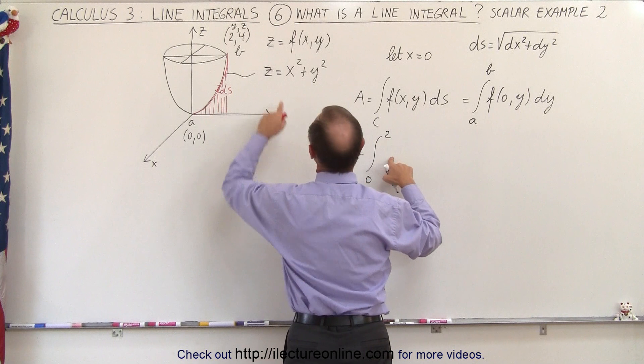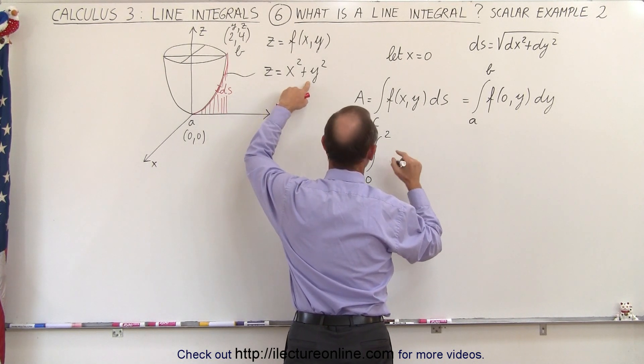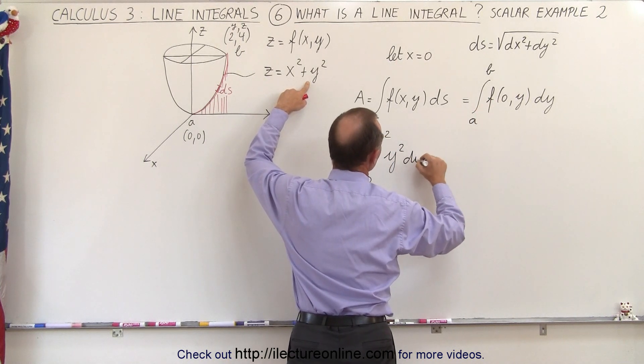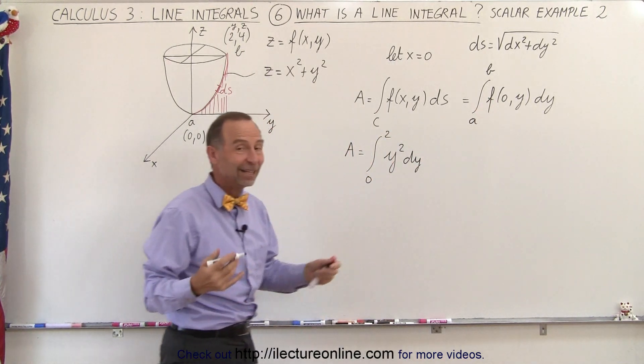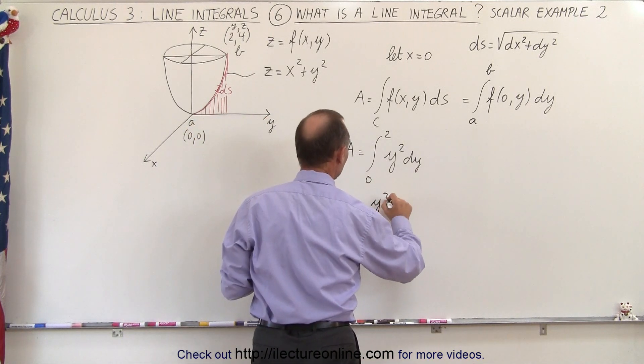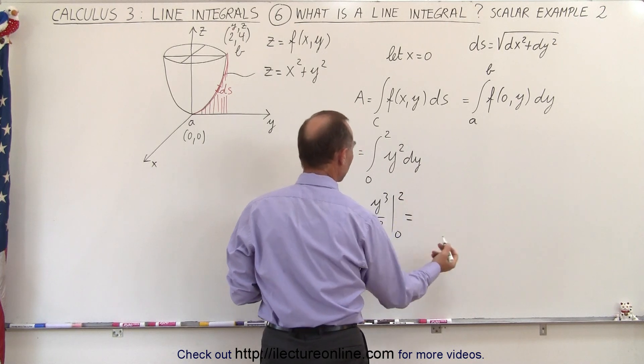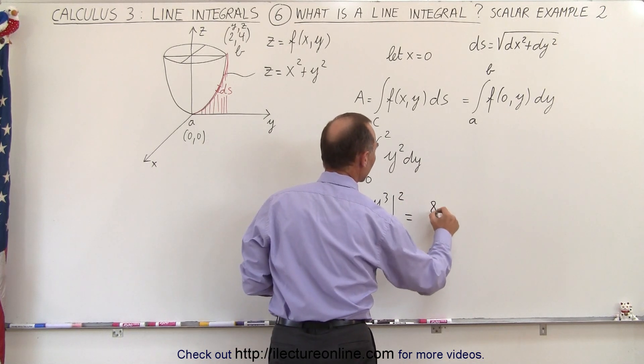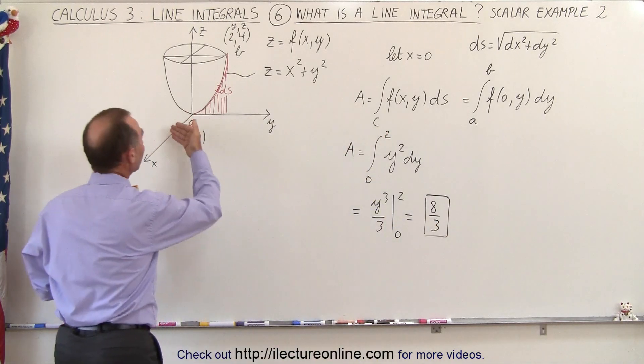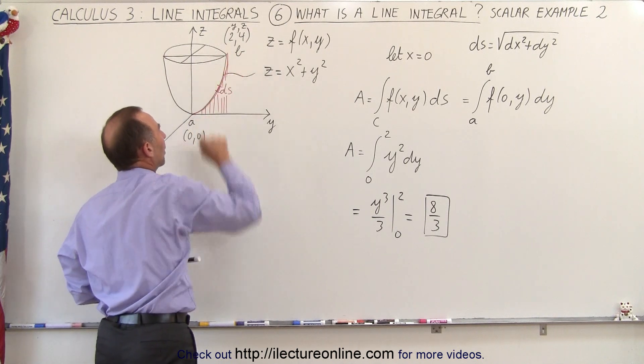The function is going to be x squared plus y squared, but since x is 0, we simply have to write y squared. Instead of ds, we write dy. So that's a really easy integral. This becomes equal to y cubed over 3, evaluated from 0 to 2. We only need the upper limit, so this will be 8 divided by 3, which is the area of the curtain hanging down from the path that we took to integrate along the edge of that paraboloid.